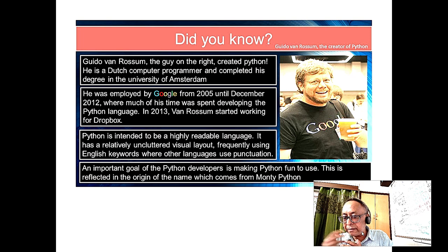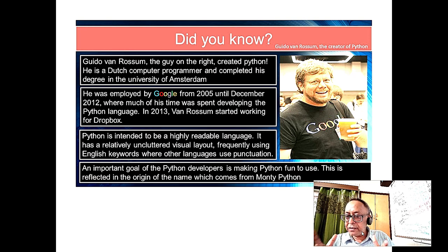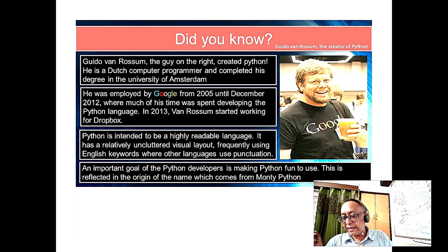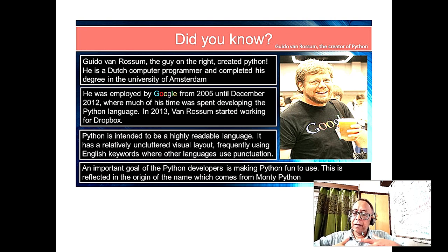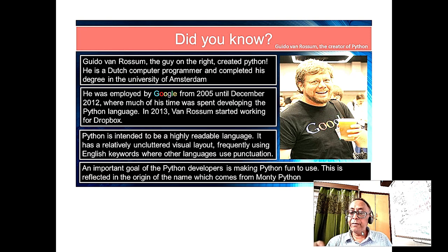There are a lot of features in Python I also do not like, but you cannot question Python because it is a proven language developed by a single man. When he developed the language, Java was not there; C and C++ were there, PHP was there. It is basically a substitution of PHP — an open source, free language.